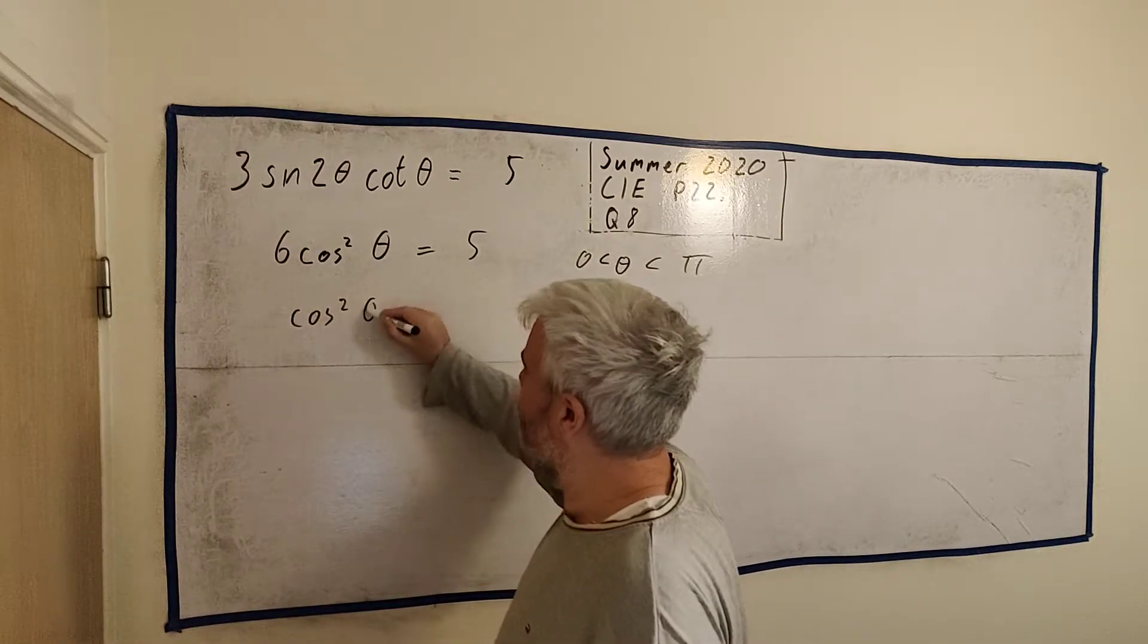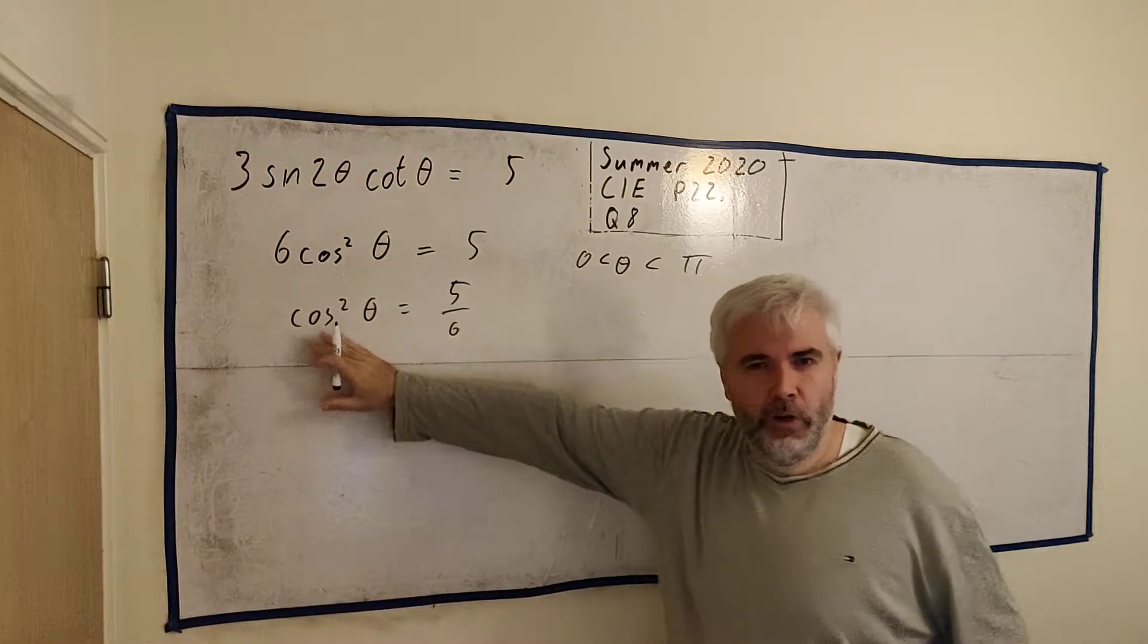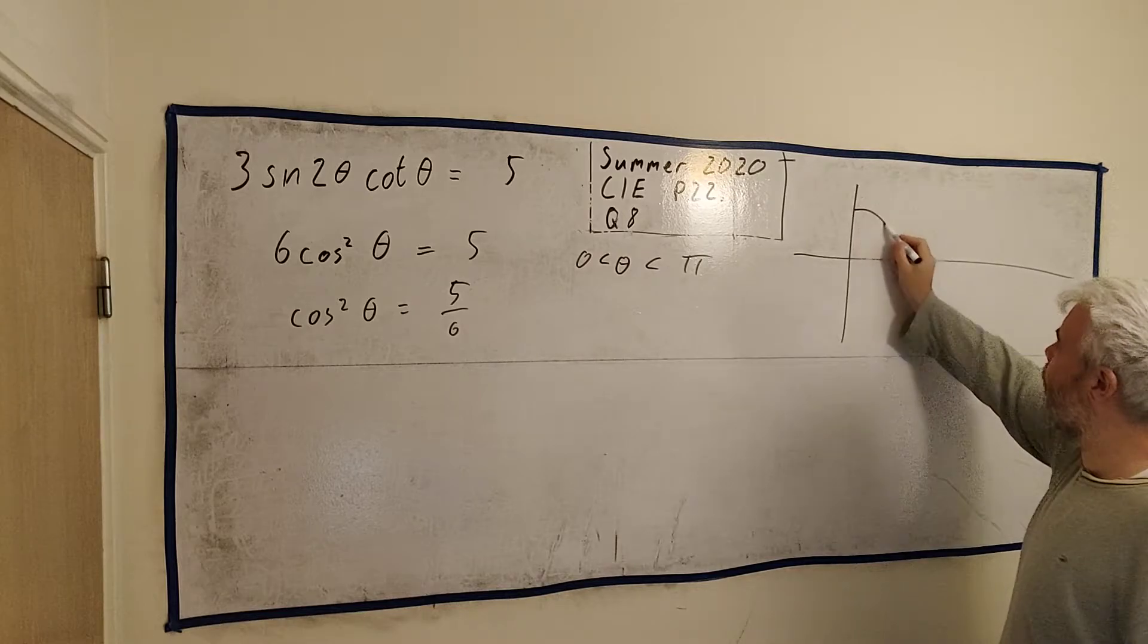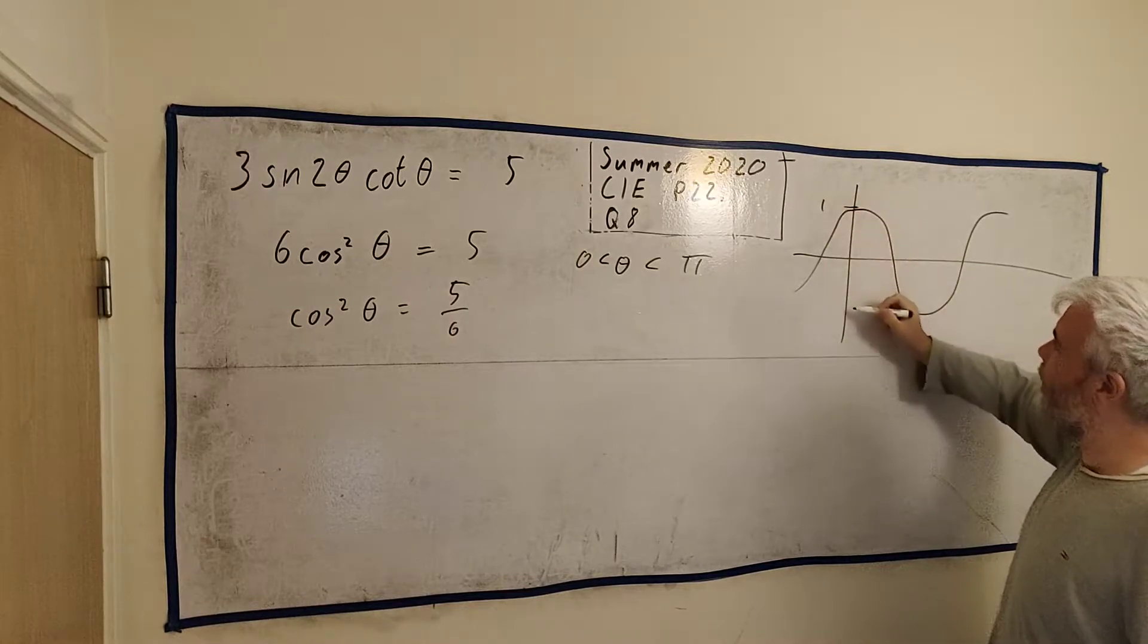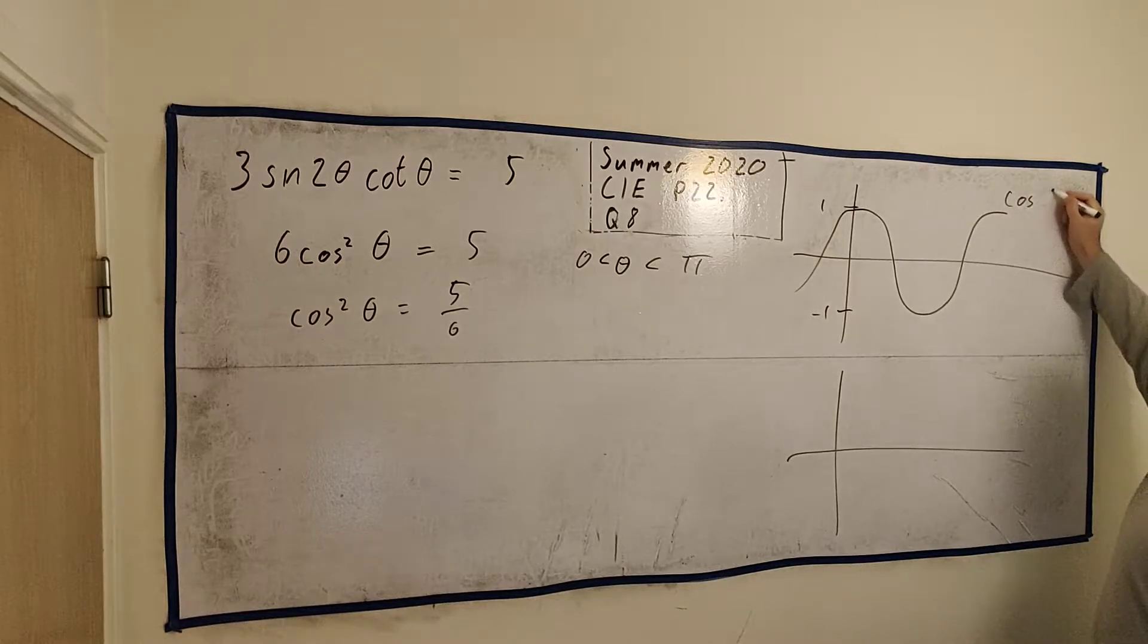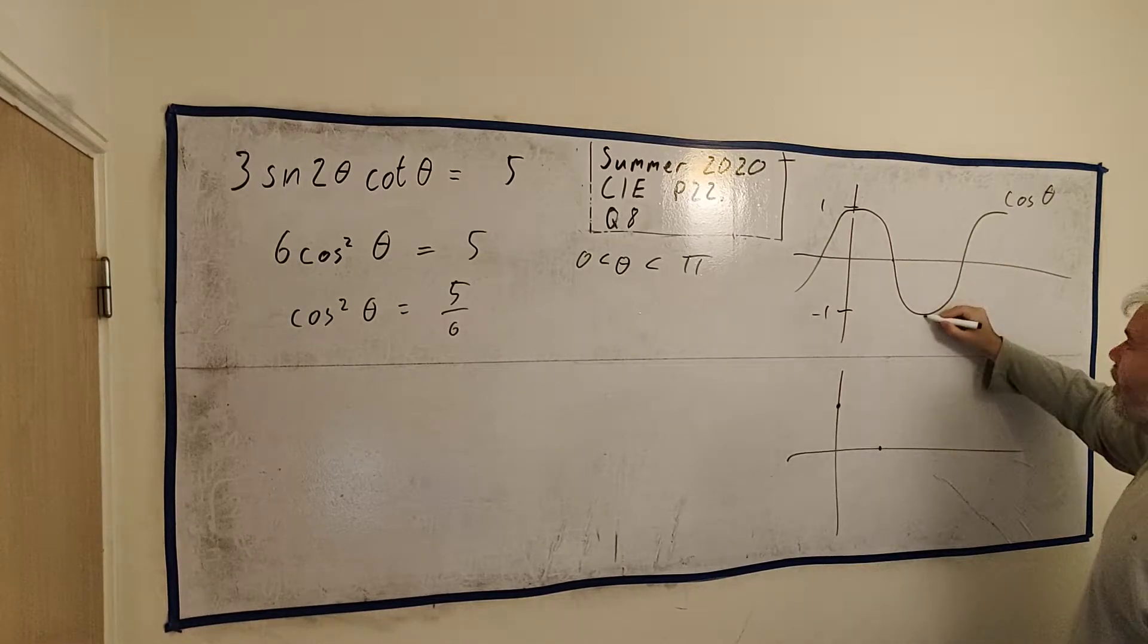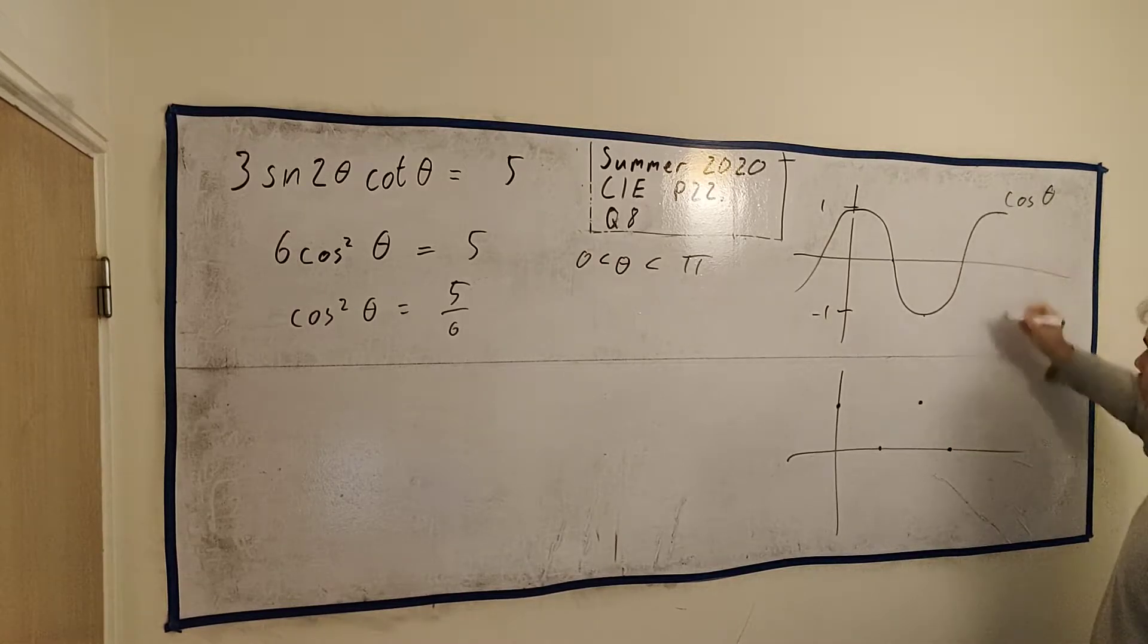We'll have cosine squared θ is equal 5 over 6. And we'll have to have a think of what cosine looks like and cosine on its own. So let's look at cosine first. Cosine looks like this. It continues on forever. This is 1 up here. This is minus 1. So let's have a think of what cosine squared would look like. So 1 squared would still be 1. 0 squared would still be 0. Minus 1 squared would become plus 1. 0 would become 0. 1 would become 1.